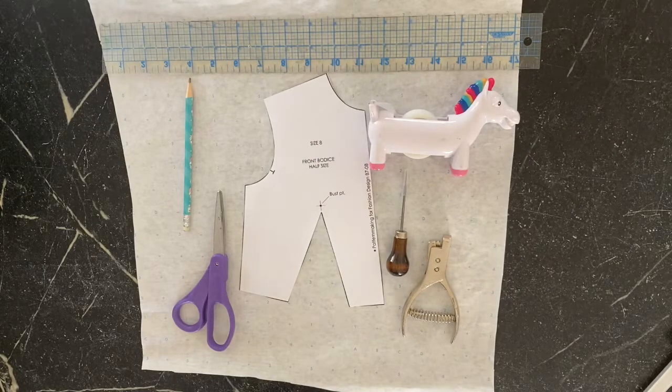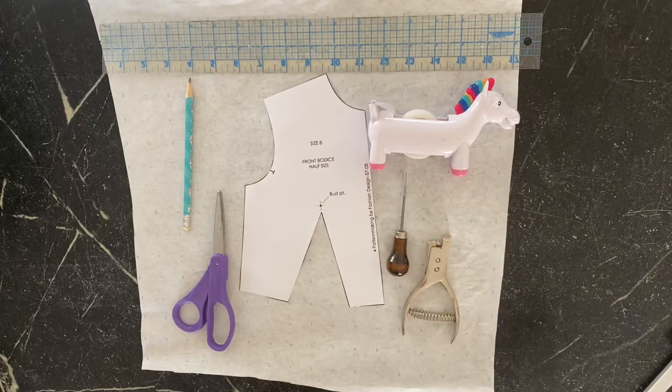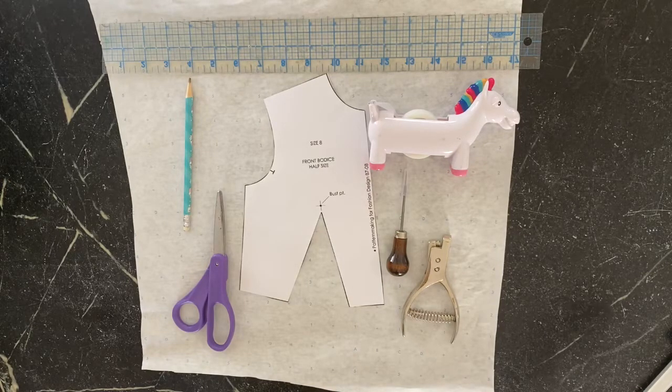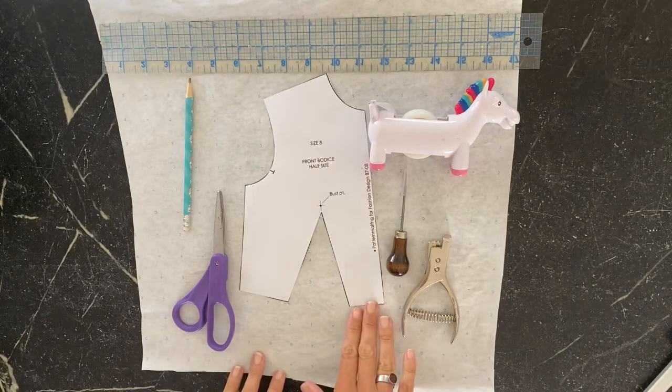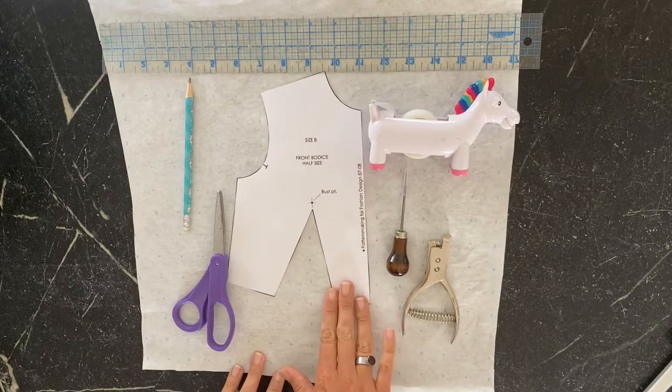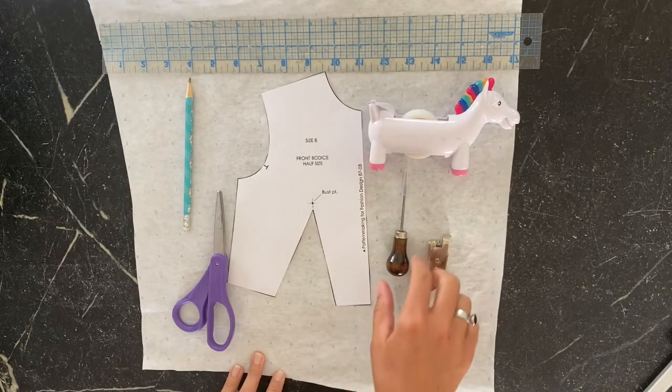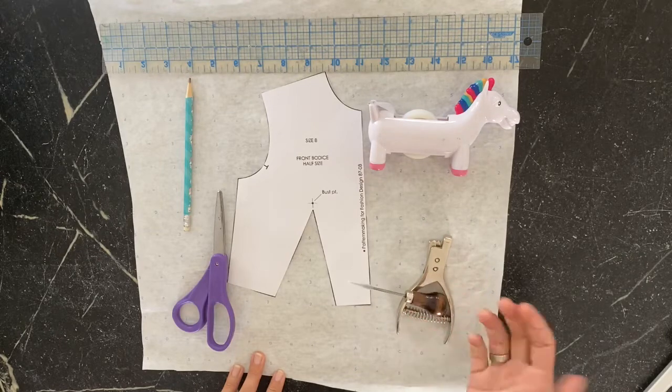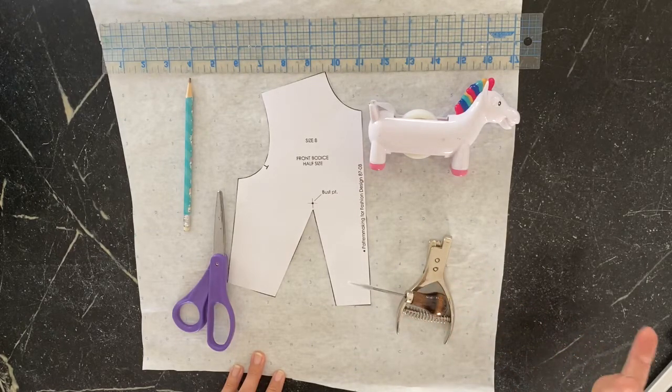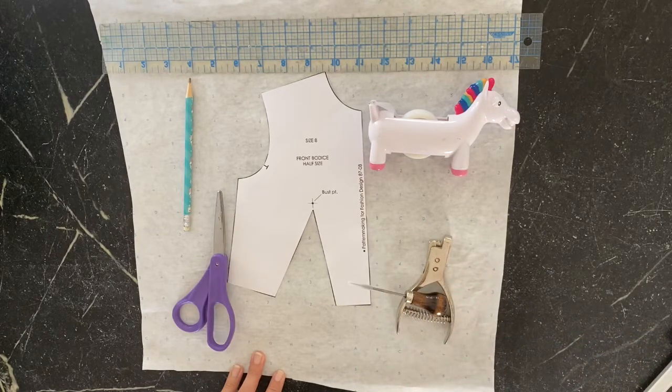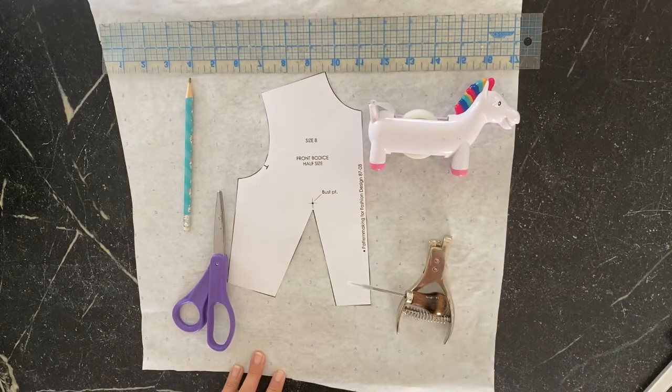Hi guys, welcome to Notebook Sample number five. Here are some tools we'll be using this time. You're going to need your basic sloper with the one dart. It calls for a notch or an awl at the end, just to kind of mark after we add seam allowance. It's not mandatory, it's totally fine if you don't have these tools.